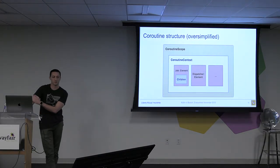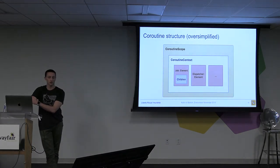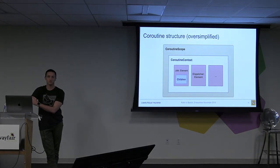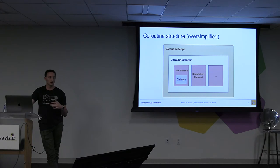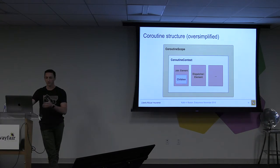Here's a visual of what I'm explaining. Global coroutine scope is the outermost bound. It contains a context, which contains a set of dispatchers that do the job it's trying to perform. And there could be multiple or nested scopes within that with more dispatchers and so on.